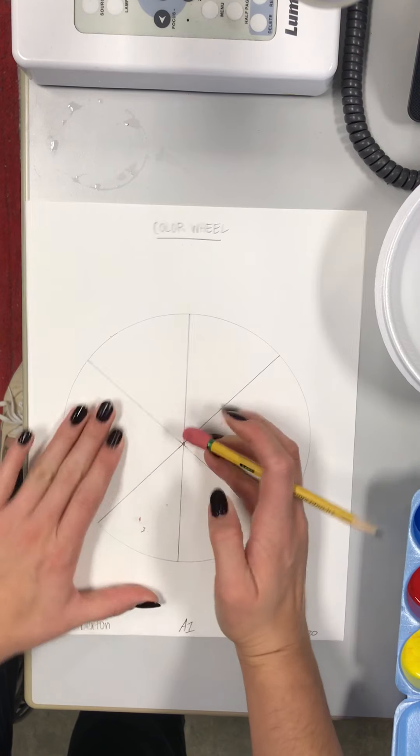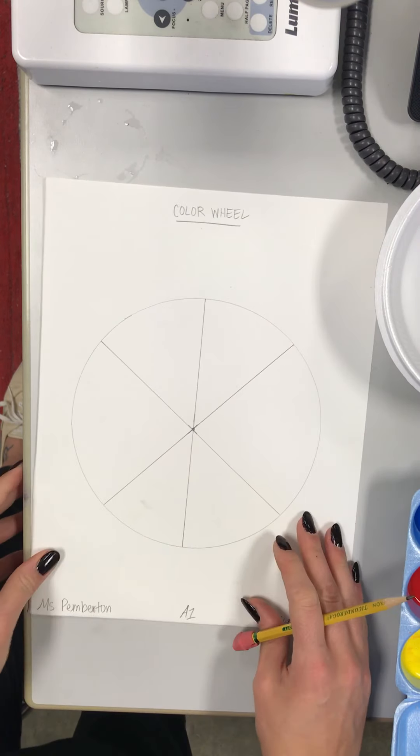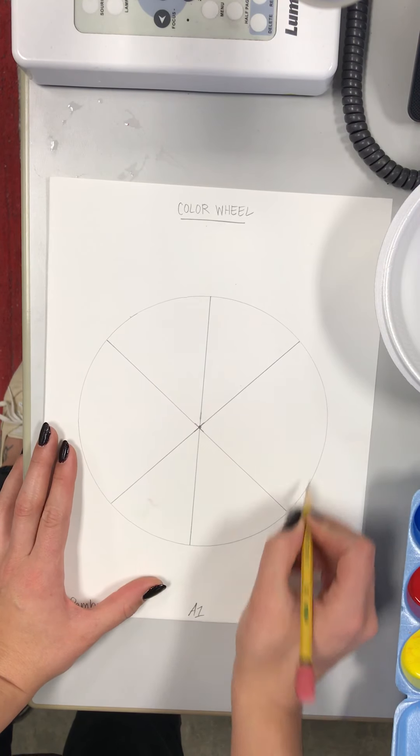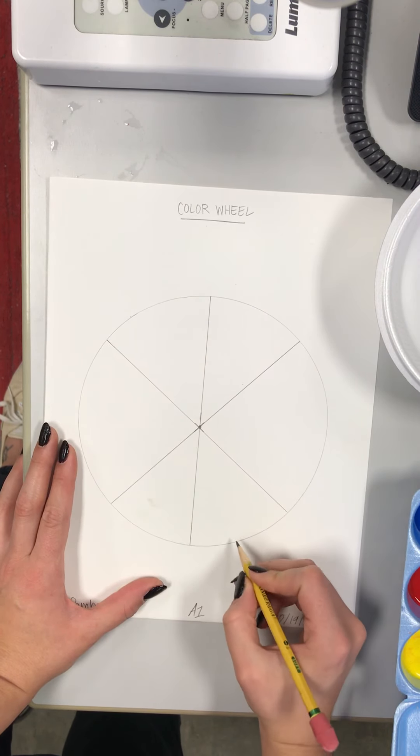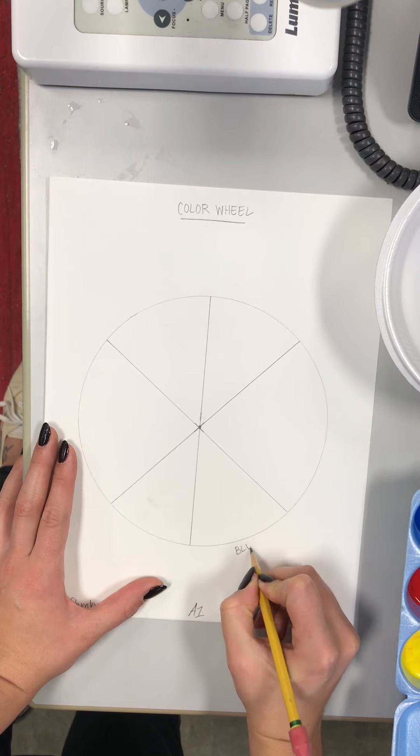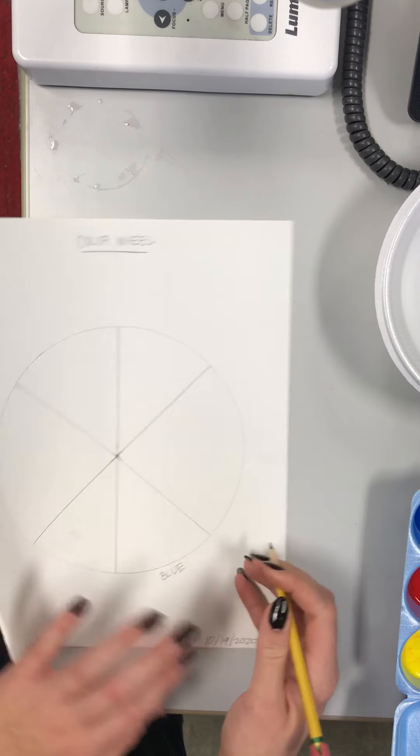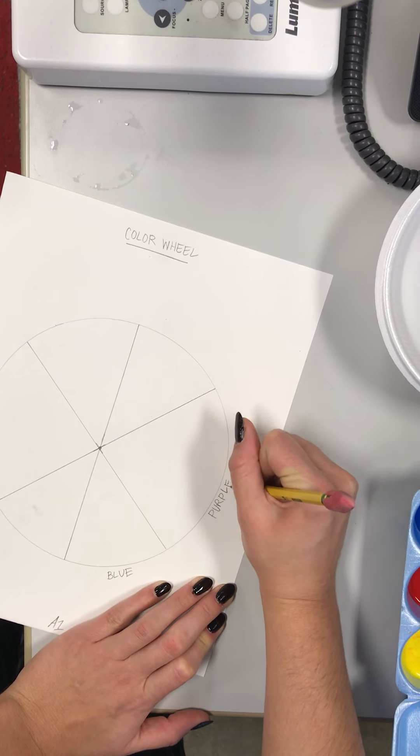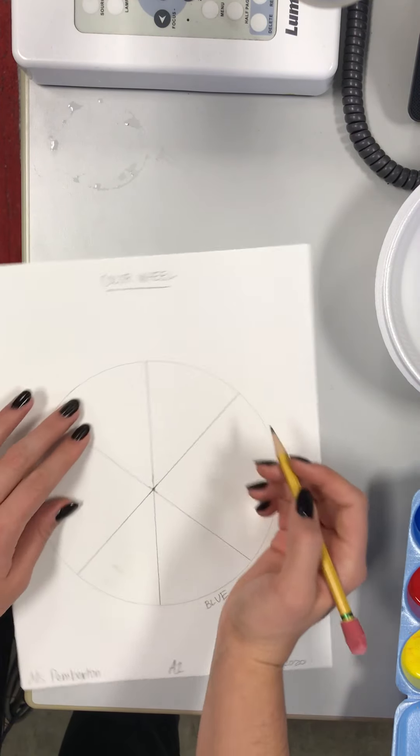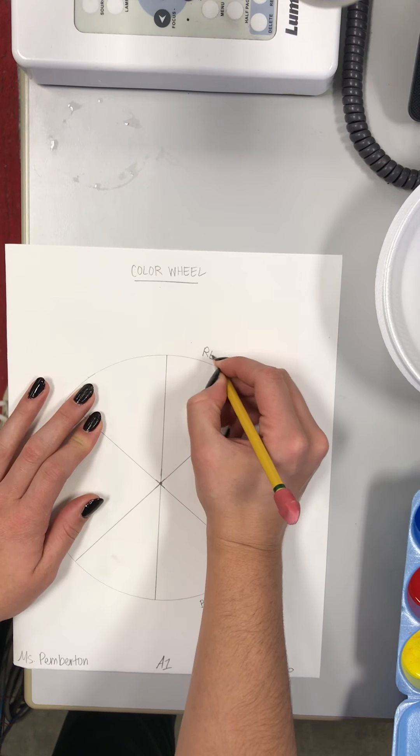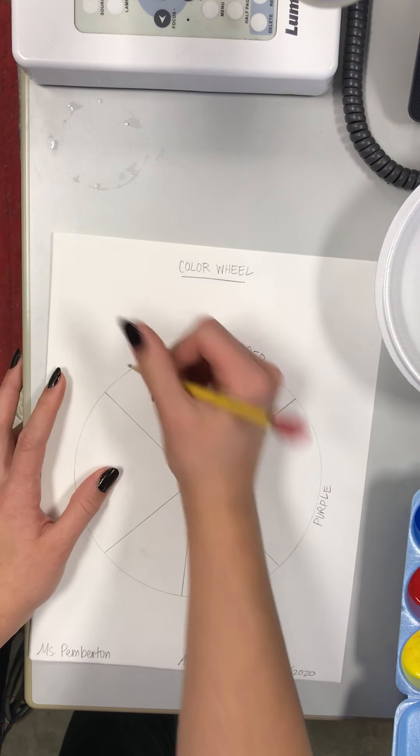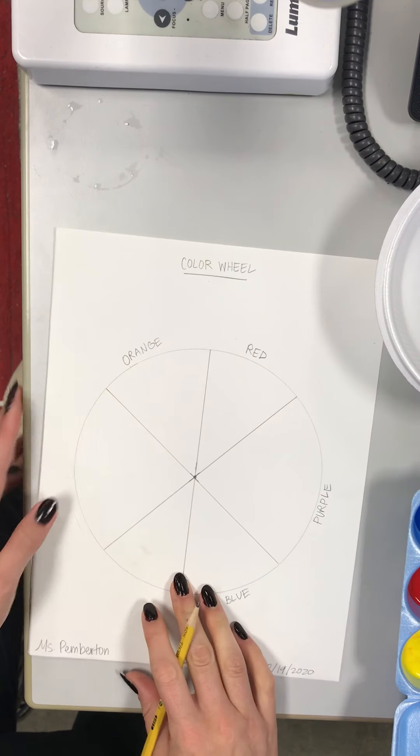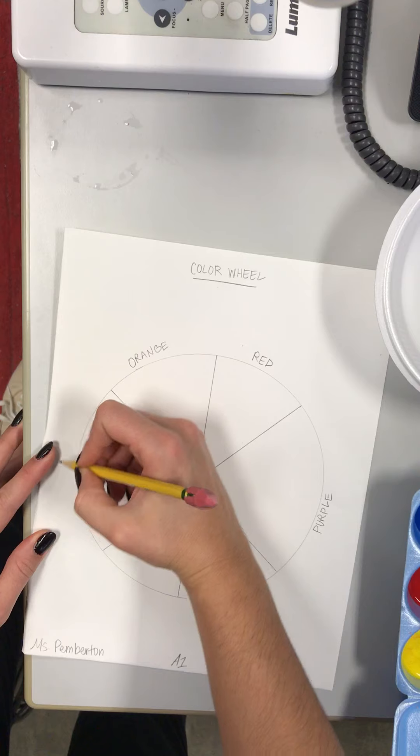After that, we're gonna label our different colors. We're gonna start here, we're gonna move counterclockwise. We're gonna start with blue, then we're gonna move to purple. After that we're gonna move to red. Next is orange. After that we've got yellow, and lastly we've got green.